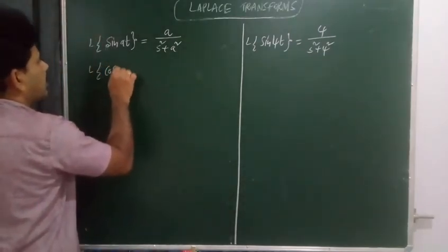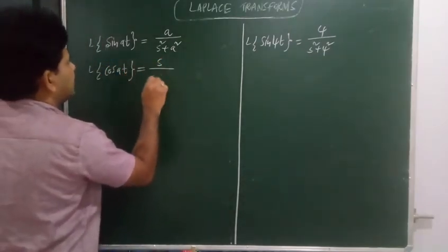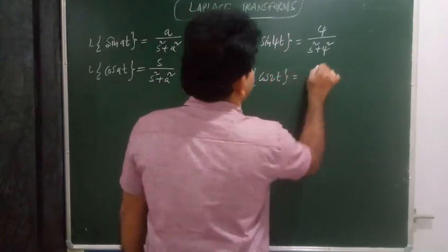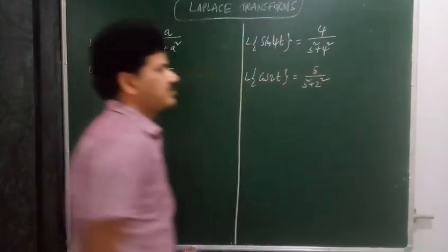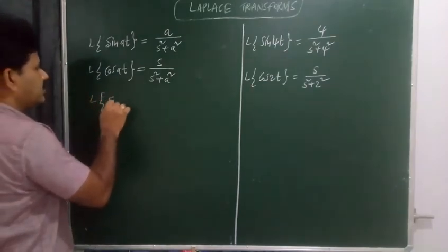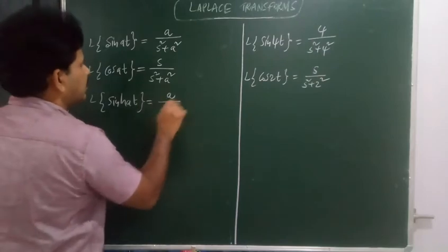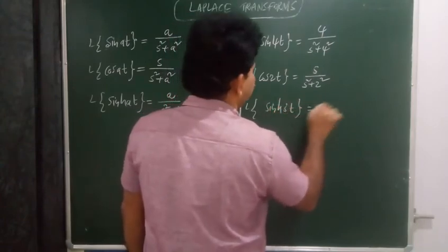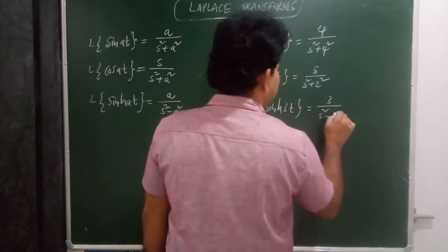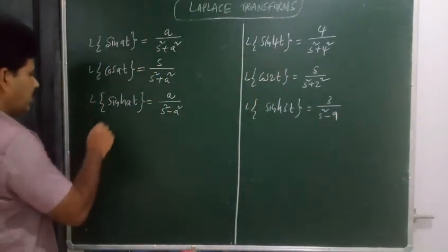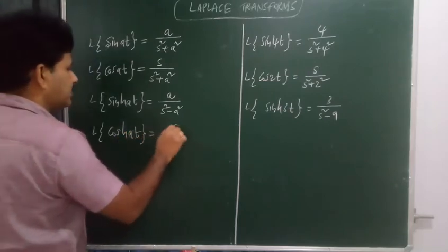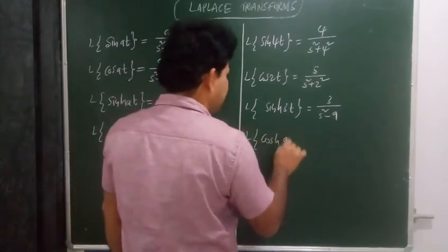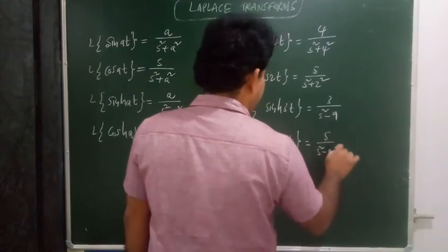L{sinh(at)} equals a over s squared minus a squared. For example, L{sinh(3t)} equals 3 upon s squared minus 3 squared, which is 9. L{cosh(at)} equals s over s squared minus a squared. For example, L{cosh(9t)} equals s over s squared minus 9 squared.